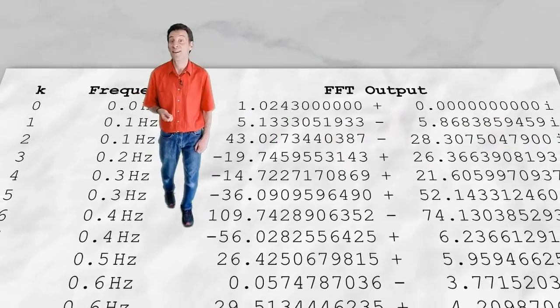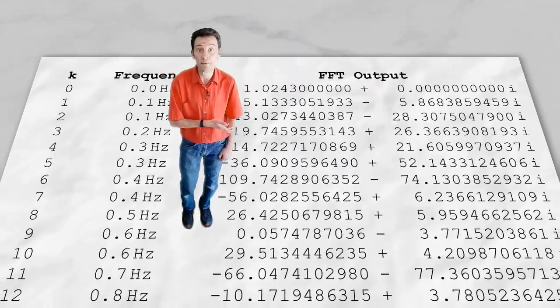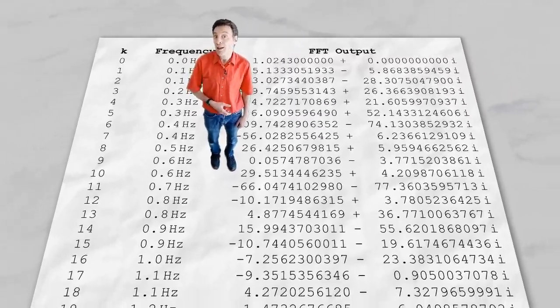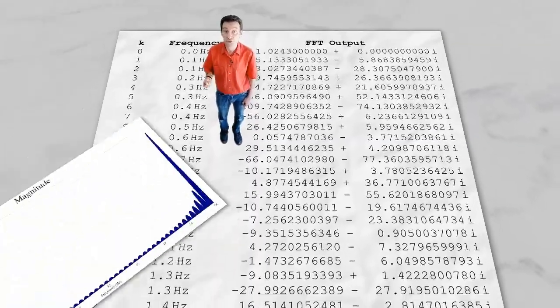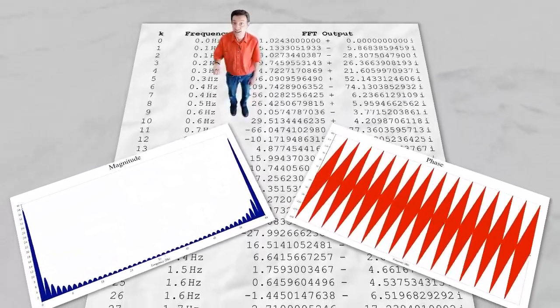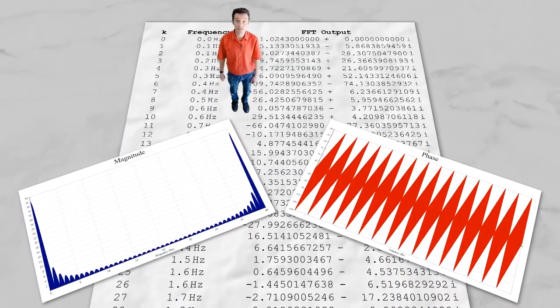So if we use Pythagoras and the inverse tangent function on the real and imaginary parts of each item in the FFT output list, we can plot graphs of the magnitudes and phases for every frequency in our signal, just like the ones we saw at the beginning of the video.